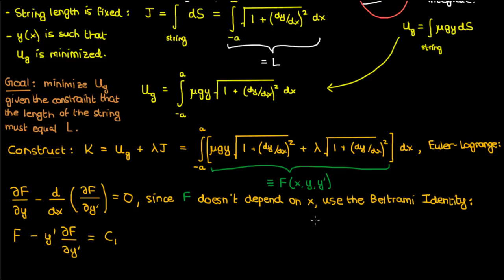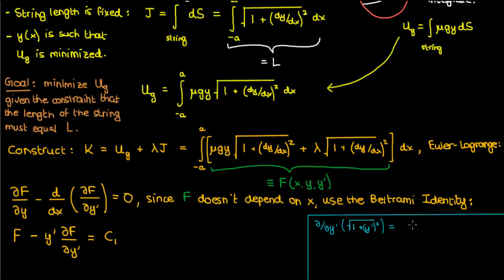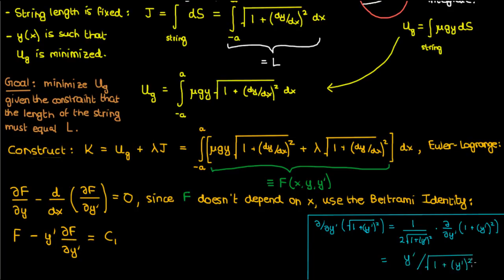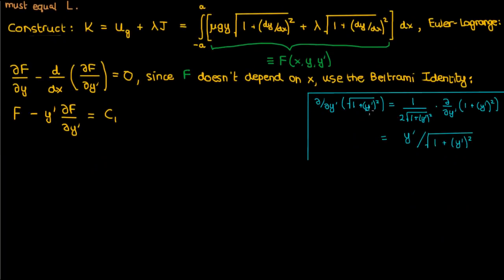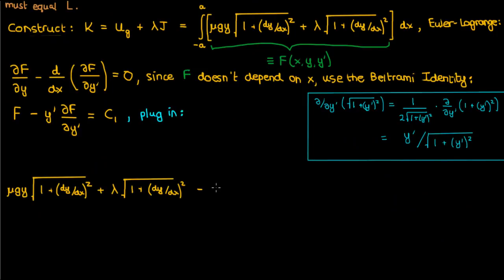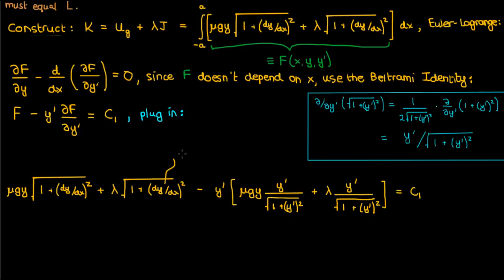Capital F contains the square root of 1 plus y' squared twice, so let's first find the partial derivative of that with respect to y'. Evaluating this derivative using the chain rule gives y' over the square root of 1 plus y' squared. Let's plug this derivative into the Beltrami identity. We multiply this y' inside, and after finding the least common denominator and simplifying, we can cancel matching terms to get a cleaner expression.